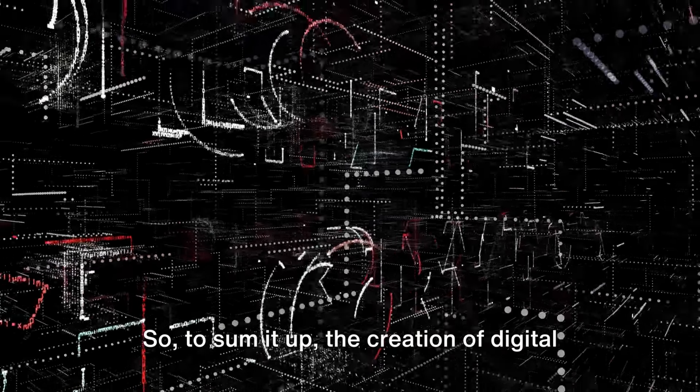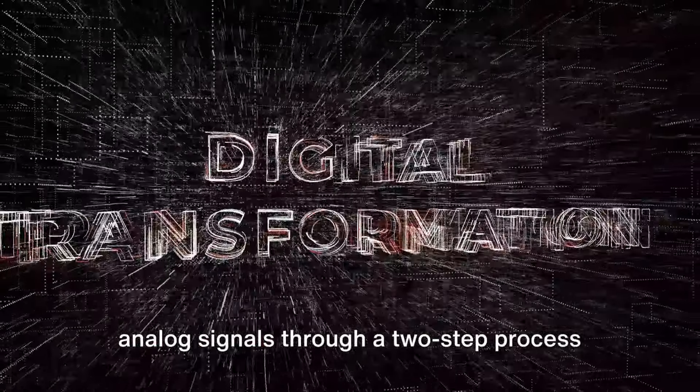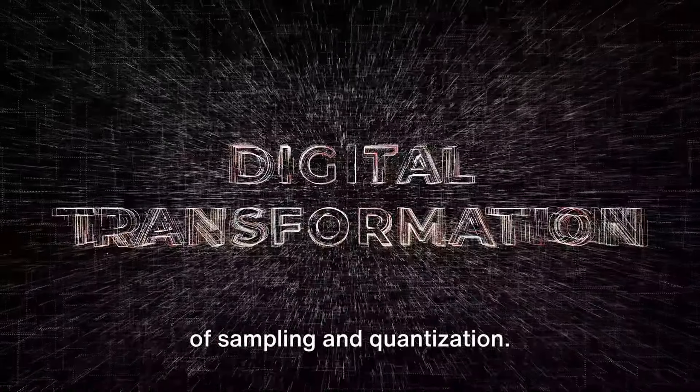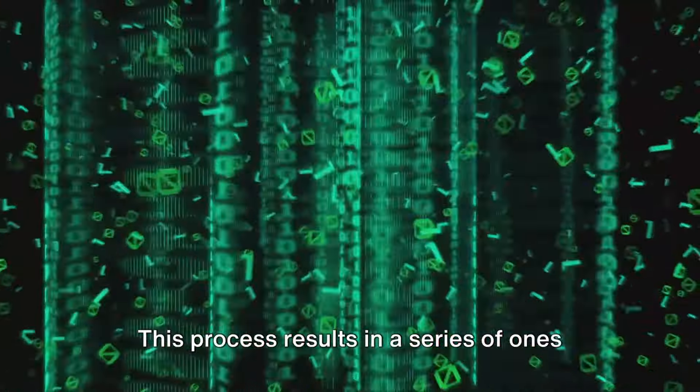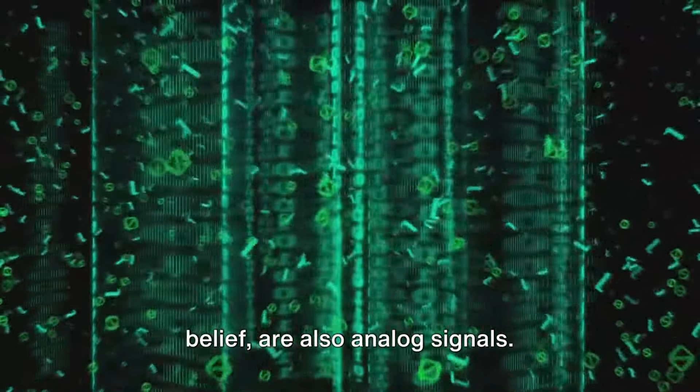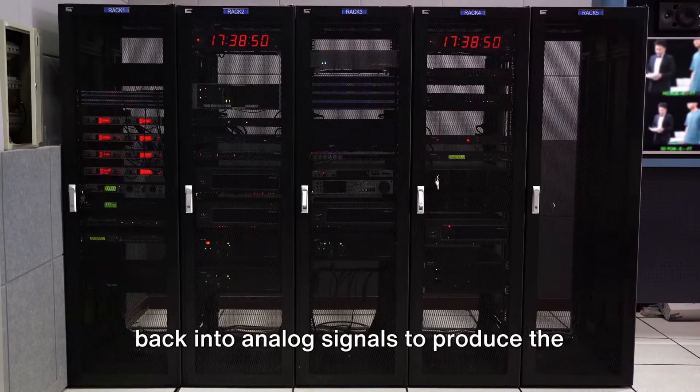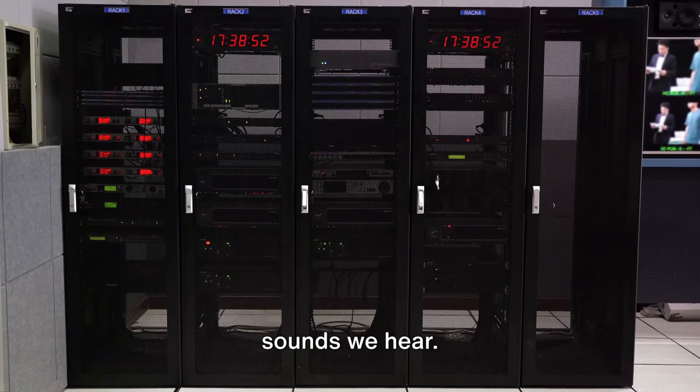So to sum it up, the creation of digital signals involves the transformation of analog signals through a two-step process of sampling and quantization. This process results in a series of 1s and 0s which, contrary to popular belief, are also analog signals. The 1s and 0s are then converted back into analog signals to produce the sounds we hear.